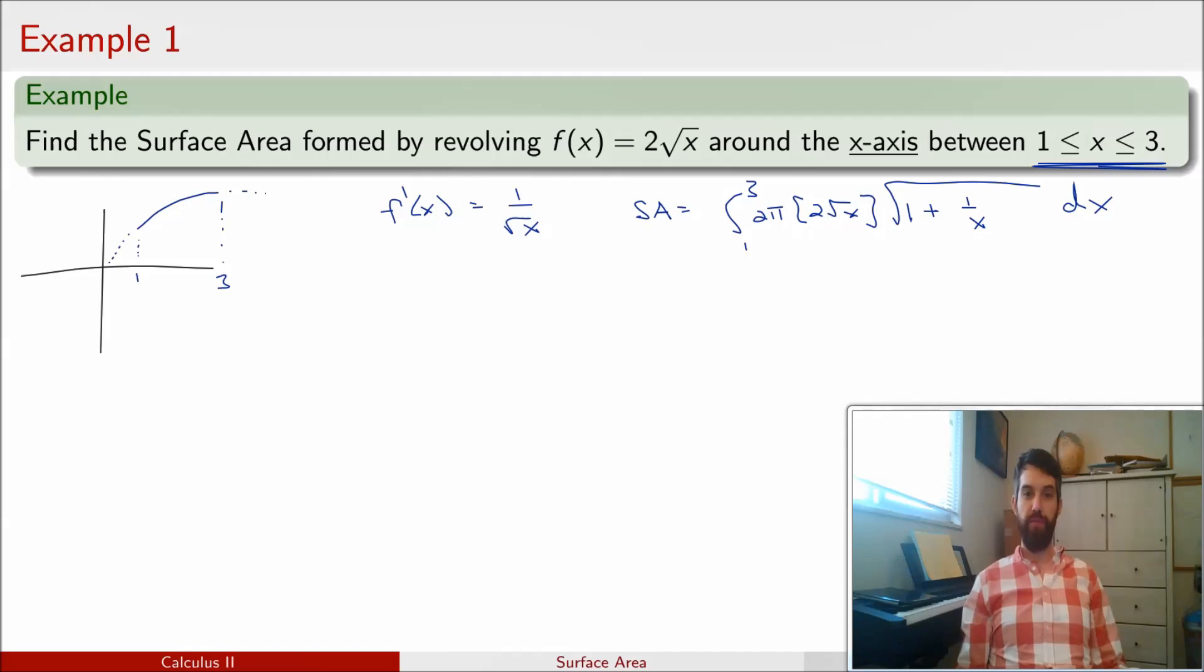So, now it's just a matter of computing this integral, and I'm going to do one thing to convert it into a slightly easier form. I'll bring out the 4π, and I have the square root of x outside, and then I also have this square root of some other stuff, so I'm just going to combine my square roots together. I think that will make it easier.